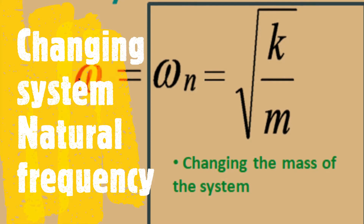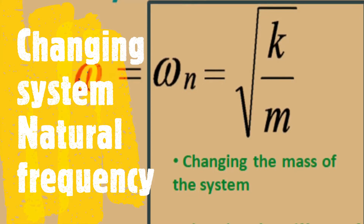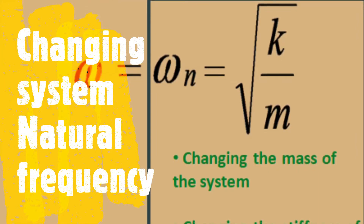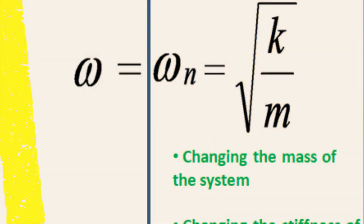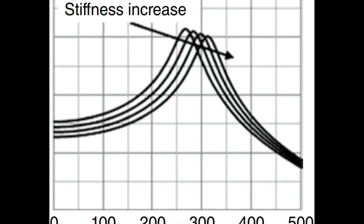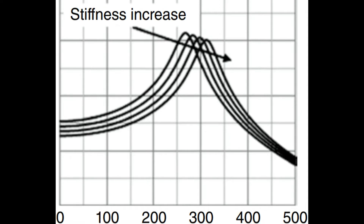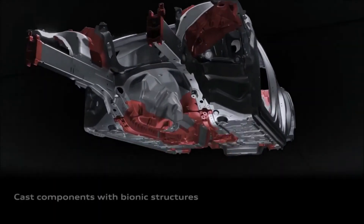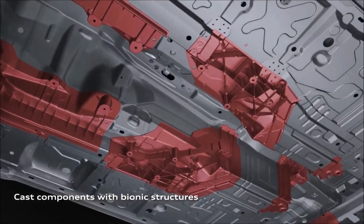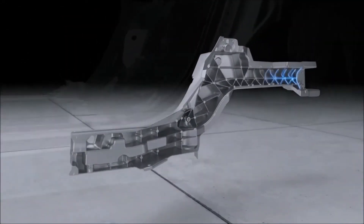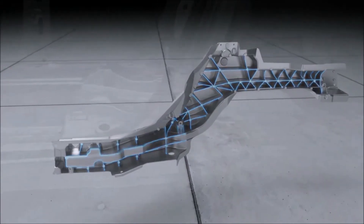One can increase the natural frequency either by increasing the stiffness or decreasing the mass of the system. Similarly, decreasing the natural frequency can be done by increasing the mass or decreasing the stiffness. In practice, the increase in natural frequency is accomplished by increasing stiffness without significant addition of mass. This can be done by providing bending, beadings, dimpling and embossment, or addition of ribs to sheet metals or structures.